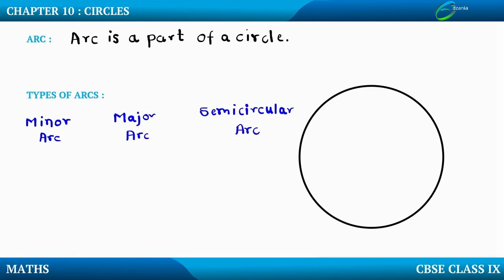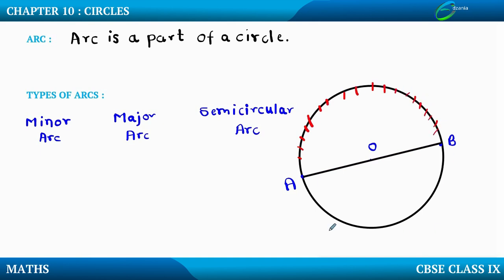First let us see what is the semi-circular arc. Suppose I consider two points on the circle, say A and B, and suppose point O is the center of the circle. When I join AB, it passes through the center, so AB is called the diameter. Since AB is the diameter, this diameter will form a semi-circular arc. The two arcs formed — from A to B on each side — can both be called semi-circular arcs. So the arc formed due to the diameter of the circle is called the semi-circular arc.